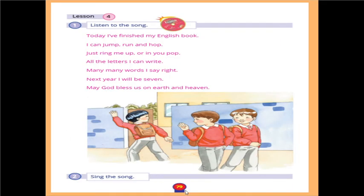On page 79 we have lesson four — our last lesson. Listen to the song: Today I have finished my English book. I can jump, run and hop. Just ring me up. All the letters I can write, many many words I say right. Next year I will be seven. May God bless us on earth and in heaven.